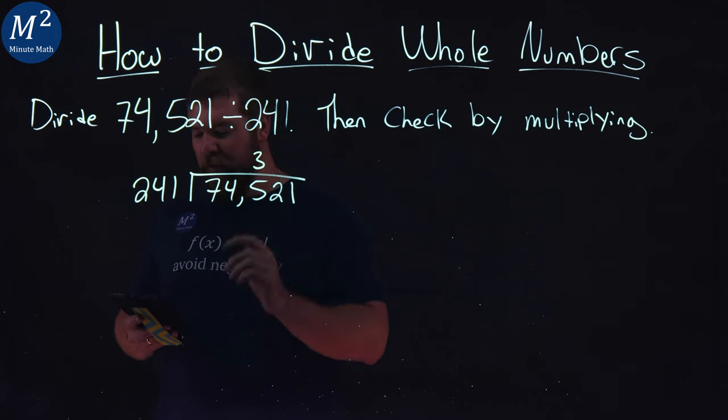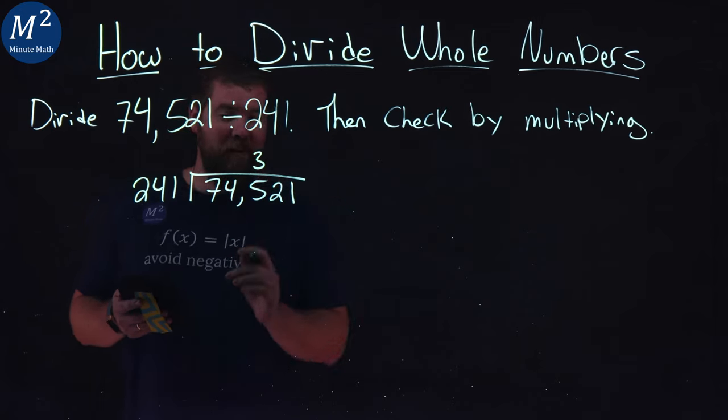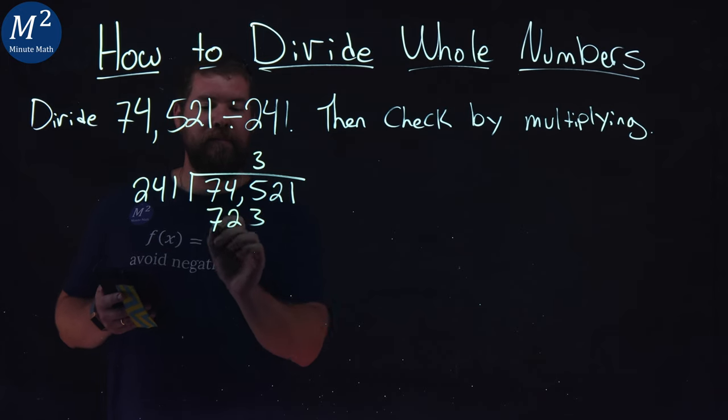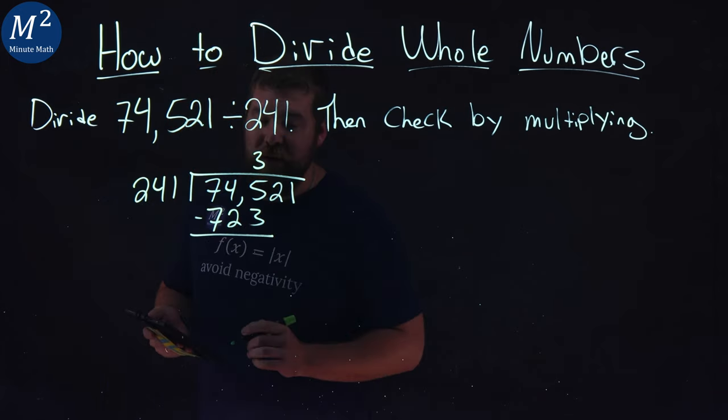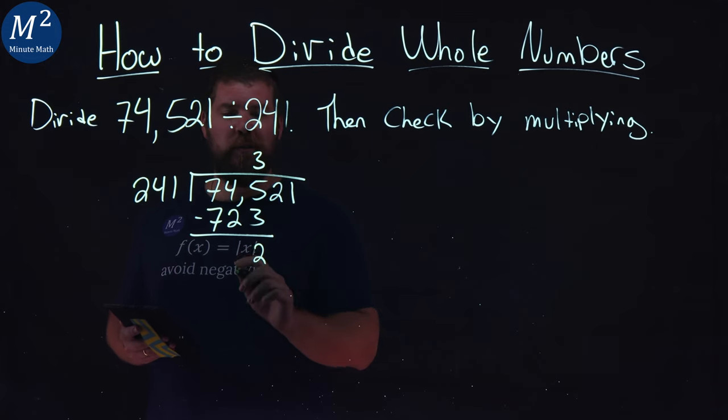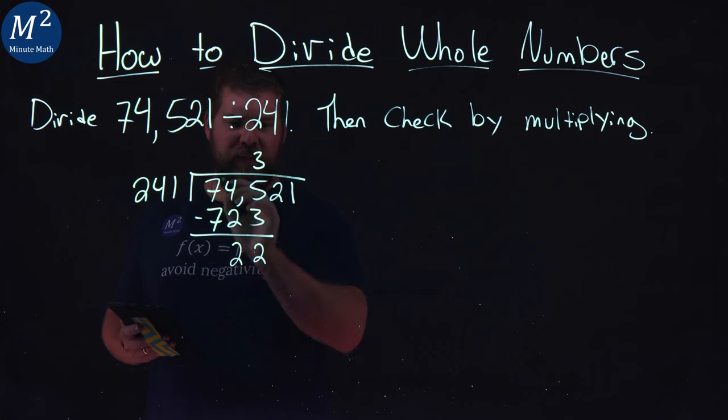That's going to be three times. Three times 241, which I don't have off the top of my head, is 723 and I subtract these two numbers. 5 minus 3 is 2 and 4 minus 2 is 2 as well. 7s cancel.